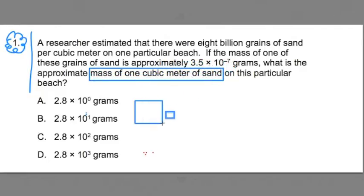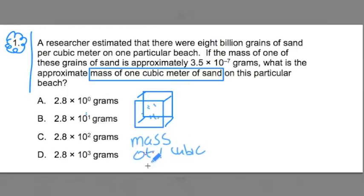That's like a cube that has sides that are one meter by one meter by one meter. And we're trying to find the mass of one cubic meter of sand. We're told information, like some valuable information in the first line. One cubic meter has 8 billion grains of sand.